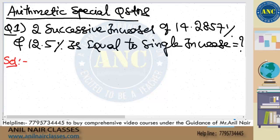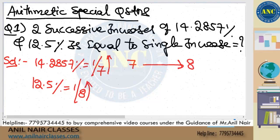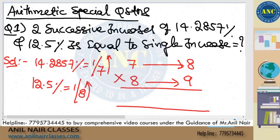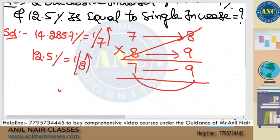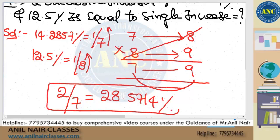Step number one: 14.2857% is 1/7. On 7, one increase — it becomes 8. 12.5% is 1/8. On 8, one increase — it becomes 9. We multiply because it is successive and one event happens after the other. So 7 is becoming 9, which is an increase of 2 on 7. Two out of seven is 28.5714%.